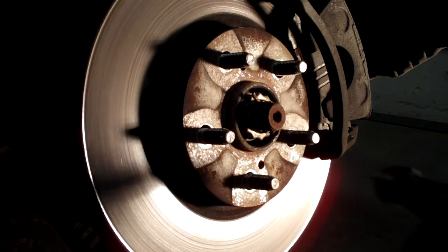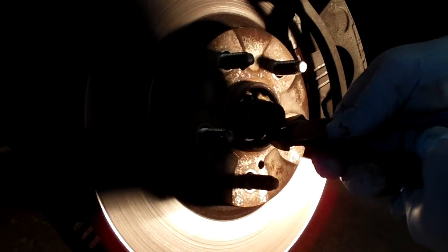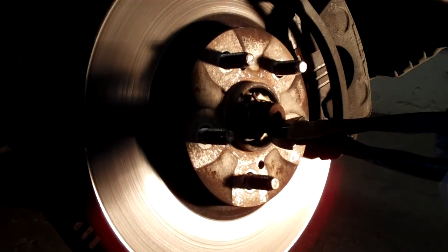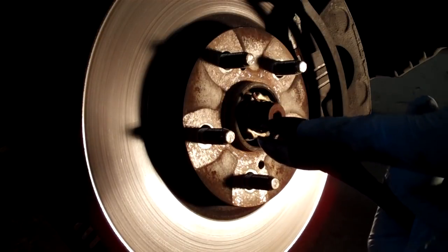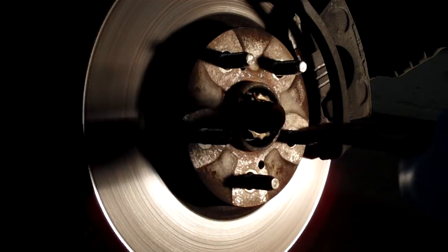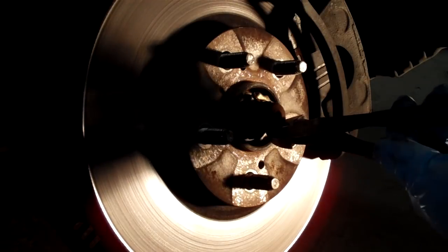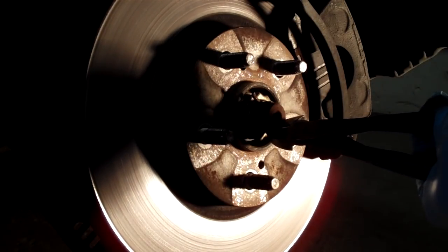So you straighten that. The next thing you do is you take your side cuts or dykes and you hit them right here on this part of the pliers where the hinge point is. So you're hitting both opposing wedges.